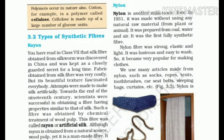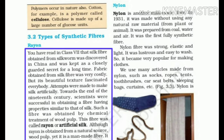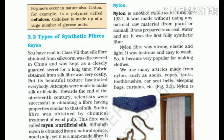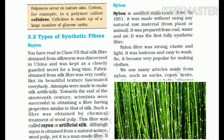Types of synthetic fibers. First, Rayon. In Class 7th, we learned about silk fiber, which we get from silkworm. It was discovered by China and they kept it secret for a long time. Fibers obtained from silk are very costly, but have a beautiful texture which is very fascinating. So scientists were trying to make such silk artificially. At the end of the 19th century, scientists succeeded in making this silk artificially. This fiber is made by chemical treatment of wood pulp and is called rayon or artificial silk.